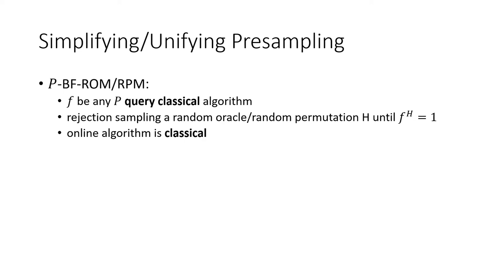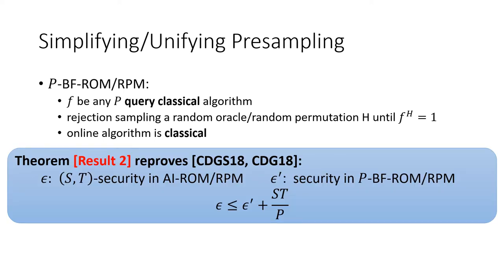We can easily generalize to other idealized models, like random permutation model. It is simply a rejection sampling of a random permutation conditioned on some p-query function output 1. With this definition, we give a unified and simpler proof for both pre-sampling of random oracles and random permutations using only standard concentration bounds. This is the second result of our work.